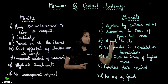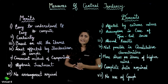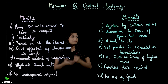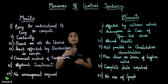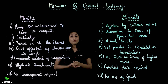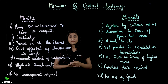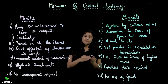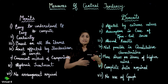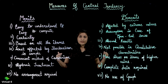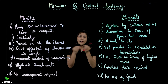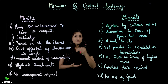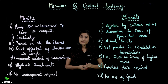The next demerit is absurd results. For example, suppose a given figure says that in India every family has 2.5 children. How can there be 2.5 children? Some families have 2 children, some have 3 or 4, but you cannot divide a child into two parts — 0.5. So that's how sometimes mean gives you absurd results.